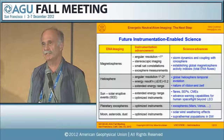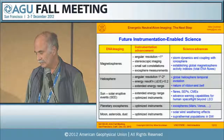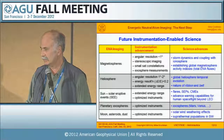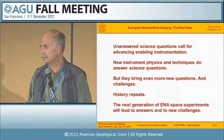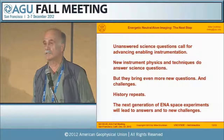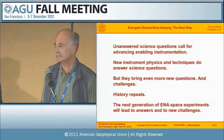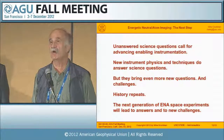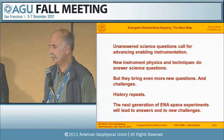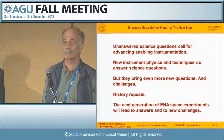These techniques can also be used to study the interaction of the solar wind with non-magnetic celestial bodies and planetary exospheres. Finally, unanswered science questions call for advancing instrument capabilities. New instrument physics and techniques do answer science questions, but they bring even more questions. History repeats, and the next generation of imaging experiments will lead to answers and to new challenges.